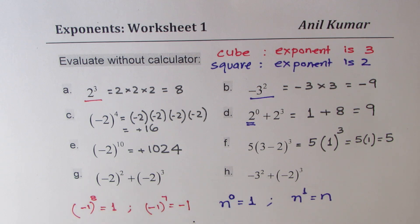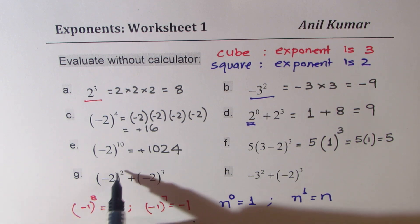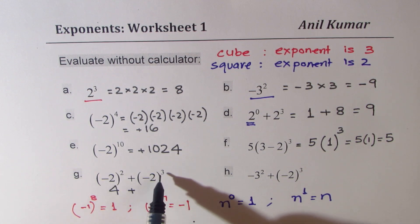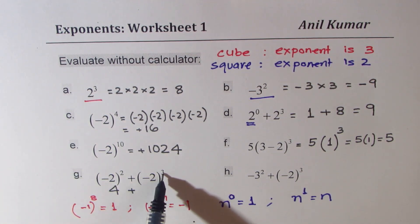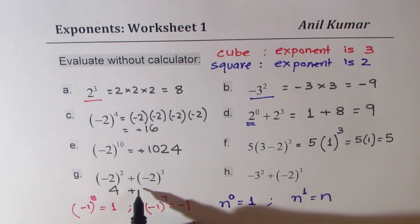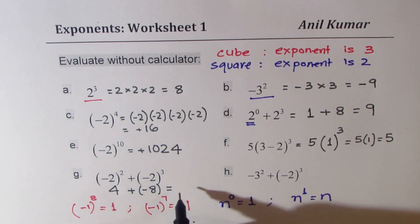Now we have two questions for you to solve. Please pause the video, answer these questions, and then check with my solutions. Minus 2 squared: minus becomes positive, so 2 squared is 4. We get 4 plus minus 2 cubed. Since the power is odd it has to be negative, and 2 cubed is 8, so we get minus 8. Our answer is going to be negative 4.